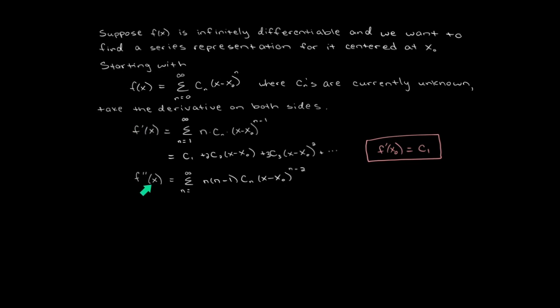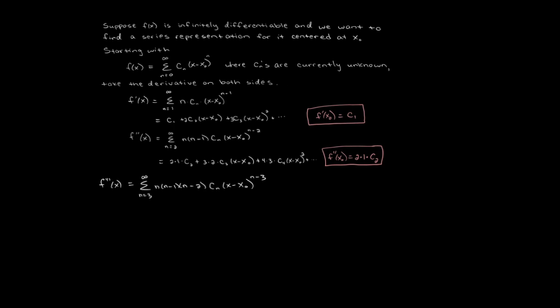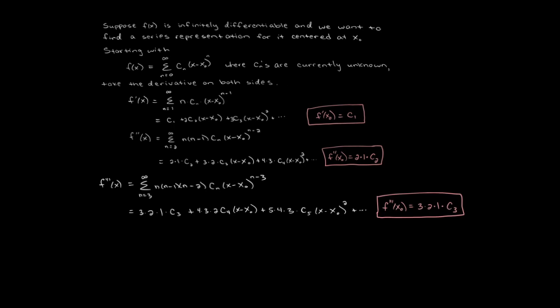Continuing with this method, we take the second derivative. Again, notice that if n starts at 1, the first term of the series is 0, so it makes more sense to start the summation at n equals 2, starting at the first non-zero term. Looking at the individual terms and plugging in x equals x-naught, most terms cancel out and we're only left with 2 times 1 times c2. Taking the third derivative, we can see that the third derivative with x-naught plugged in gives us 3 times 2 times c3.